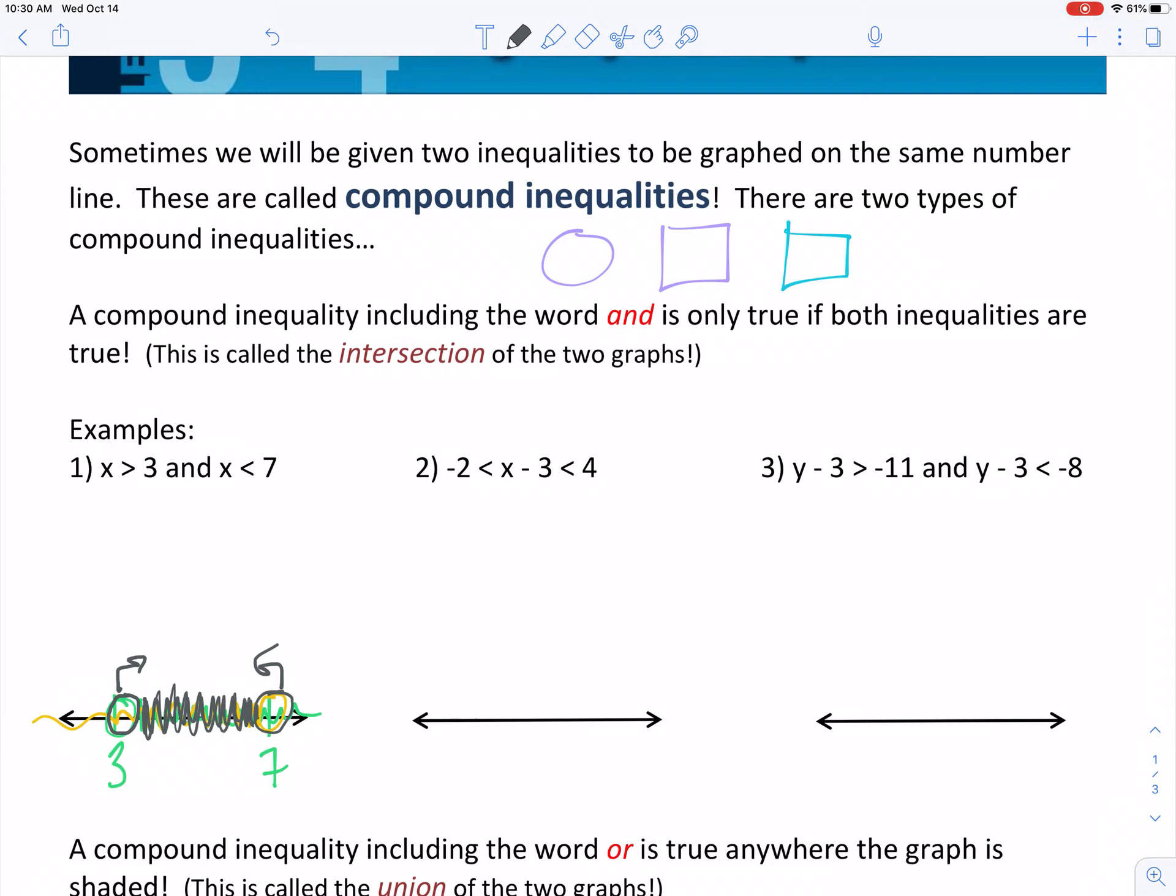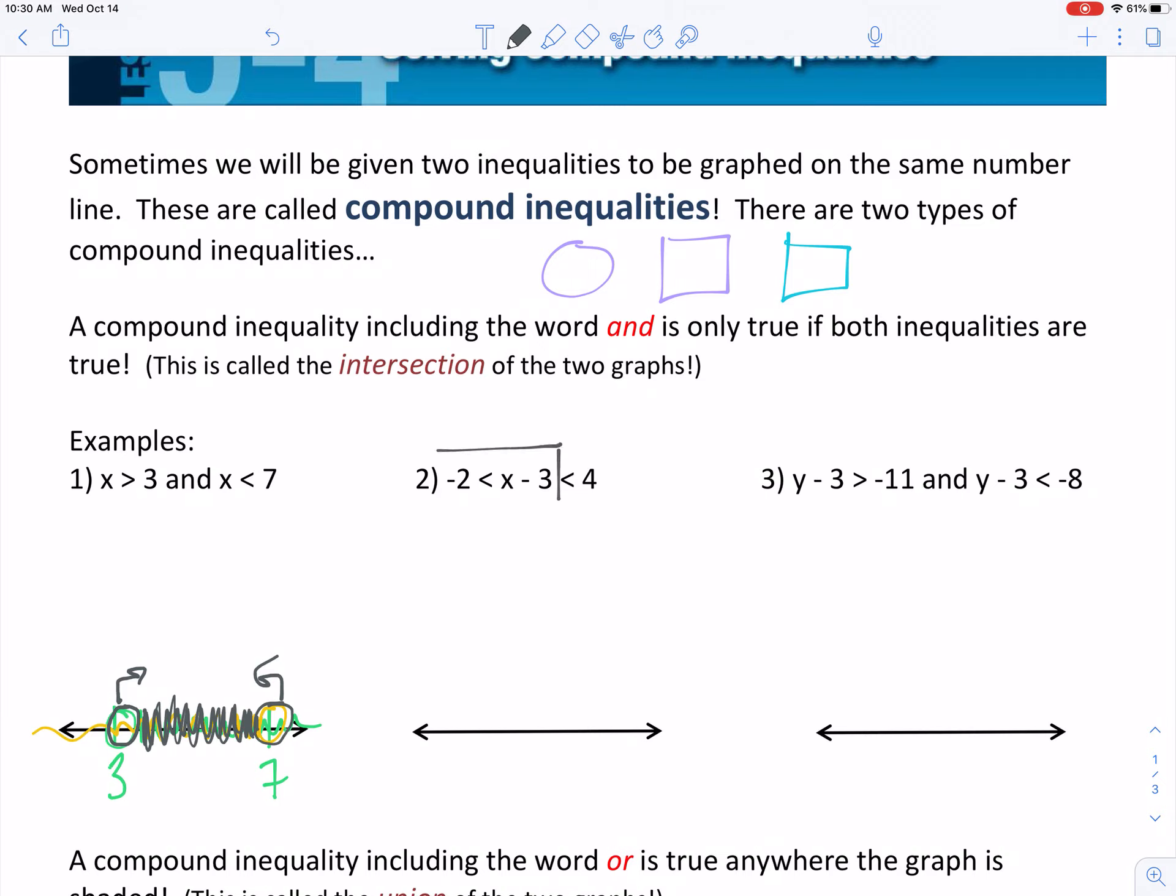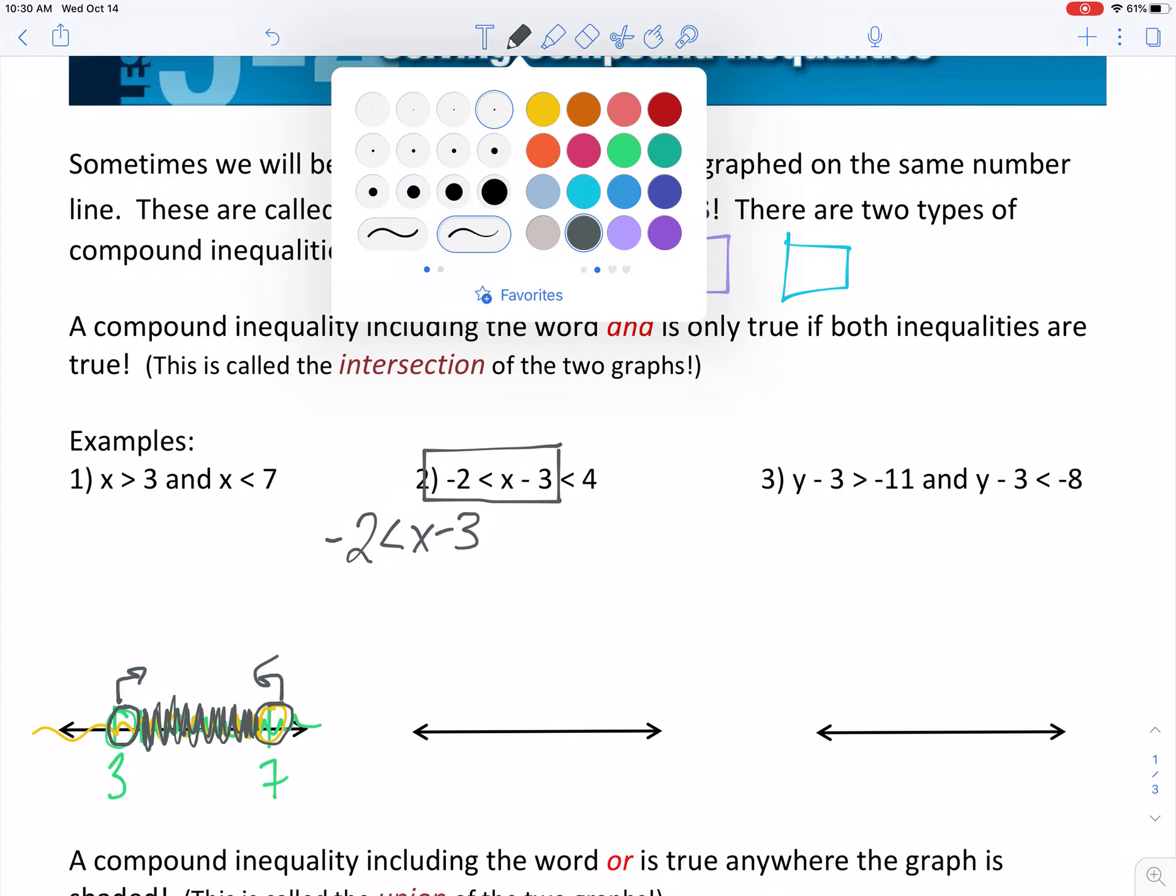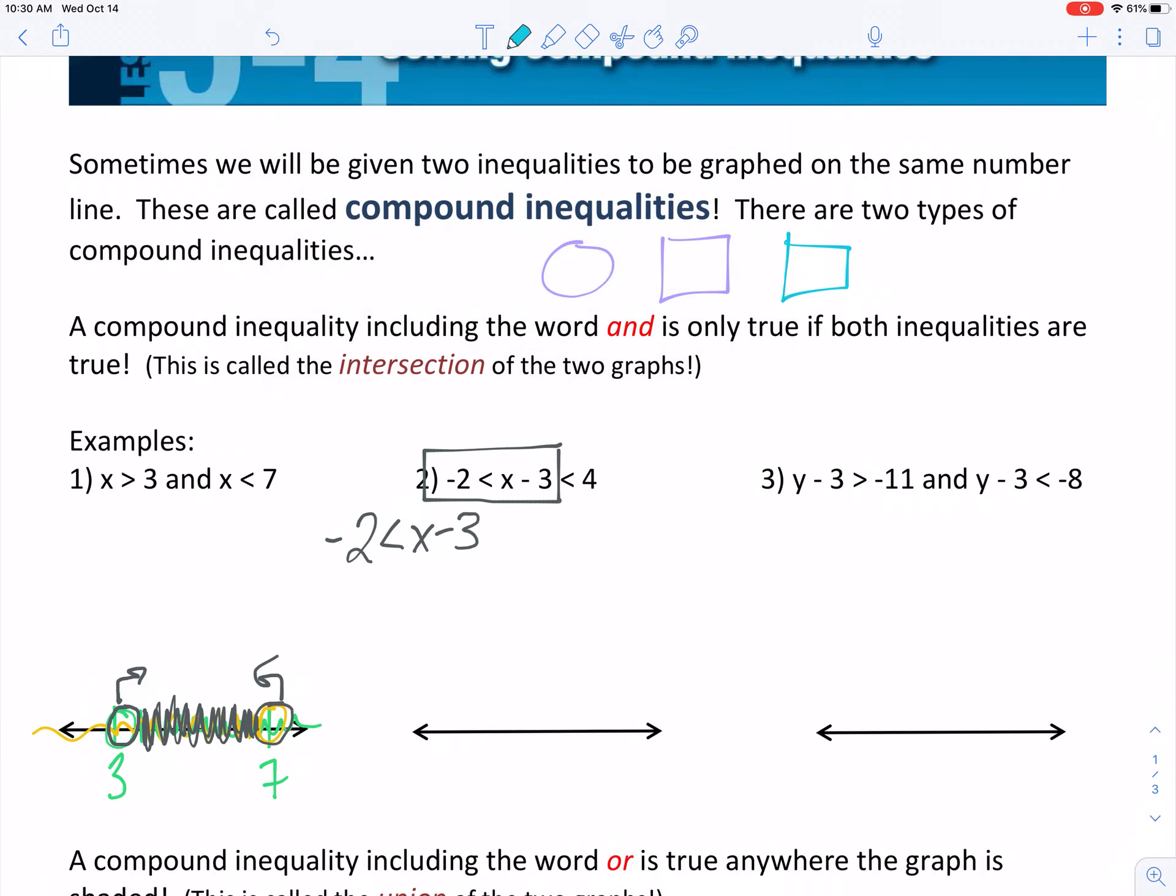So let's do one more like what you're going to see on your homework today. Number two is actually an and inequality, even though it doesn't say the words and. Here's what you're going to do. Now, take everything from the left side of that first, I'm sorry, of the second inequality sign. This is the first inequality you're going to solve. So negative two is less than x minus three. And the other one that you'll be solving is going to be everything on the right of the first inequality sign. So you'll be solving all of that. x minus three is less than four.